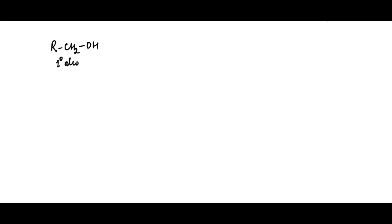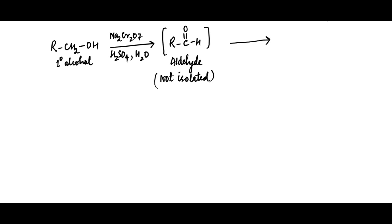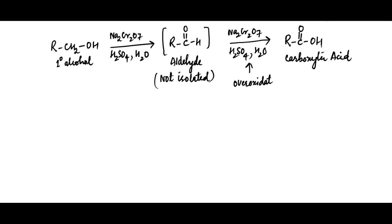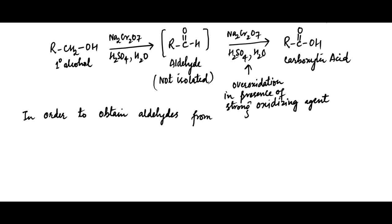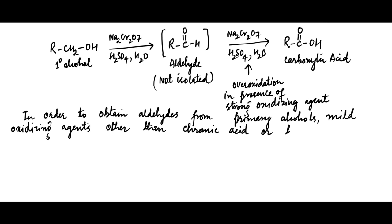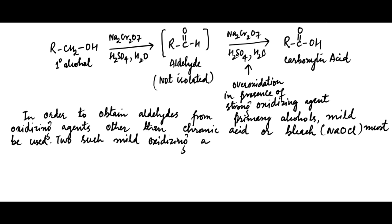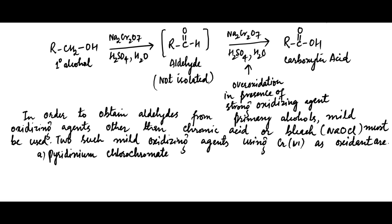When a primary alcohol is oxidized with chromic acid, a carboxylic acid is obtained. It is generally difficult to control the reaction to produce the aldehyde. The over-oxidation of aldehyde in the presence of strong oxidizing agent gives carboxylic acid. In order to produce aldehydes from primary alcohols, mild oxidizing reagents other than chromic acid or bleach (NaOCl) must be used. Two such mild oxidizing agents using chromium-6 are pyridinium chlorochromate (PCC) and pyridinium dichromate (PDC).